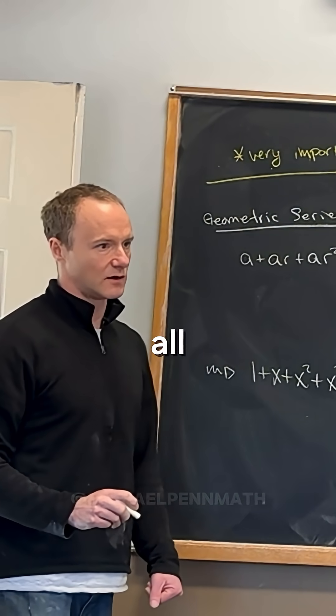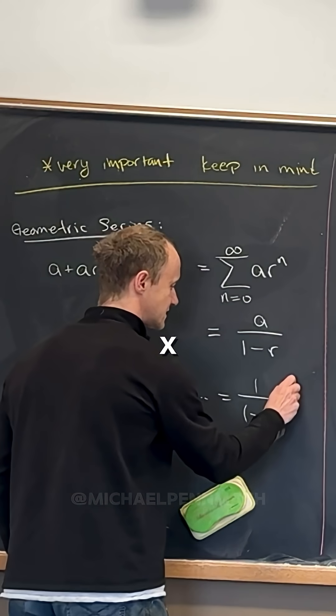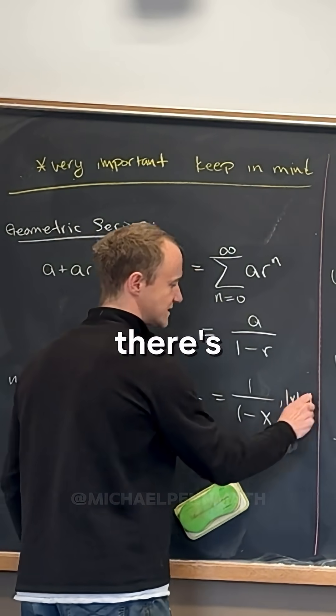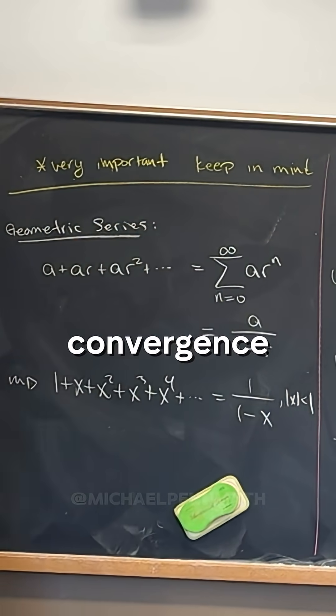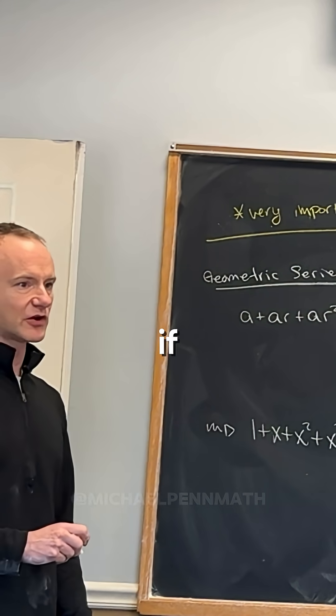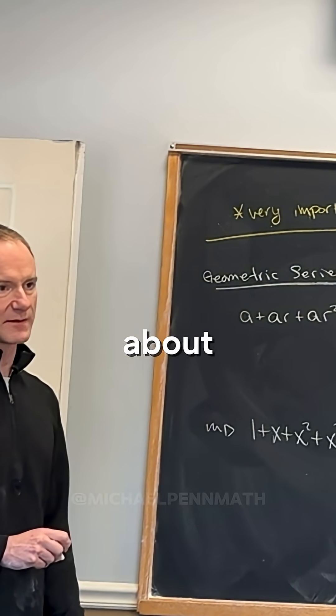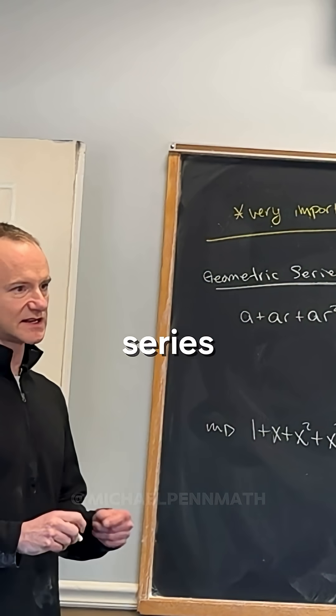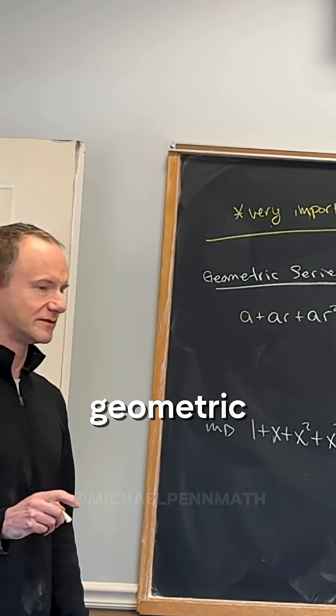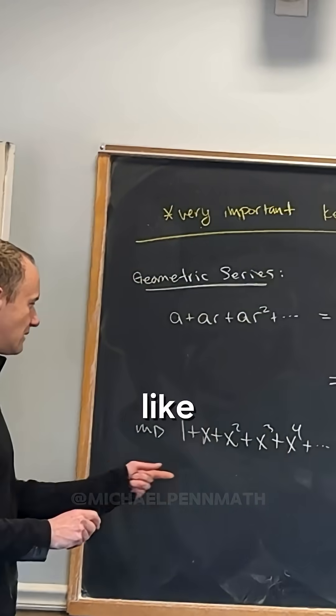And this is not for all values of x. This is when |x| is less than 1. There's this thing called the radius of convergence. So I would say if you're going to remember a couple of things about power series, the geometric series and how to nimbly work with geometric series is super important. Everything will be built off of this formula right here.